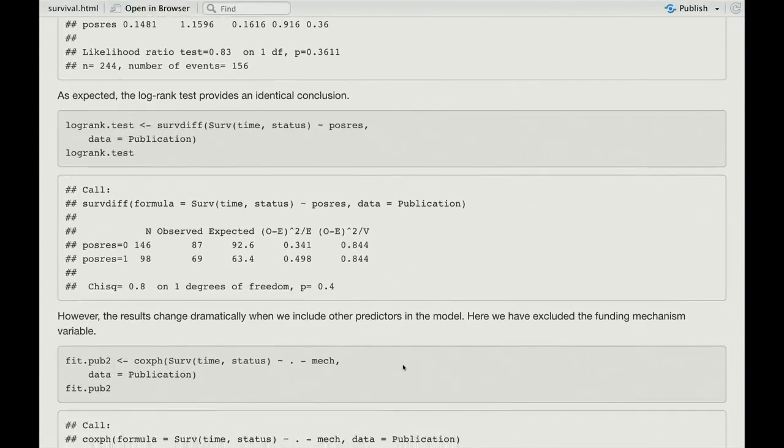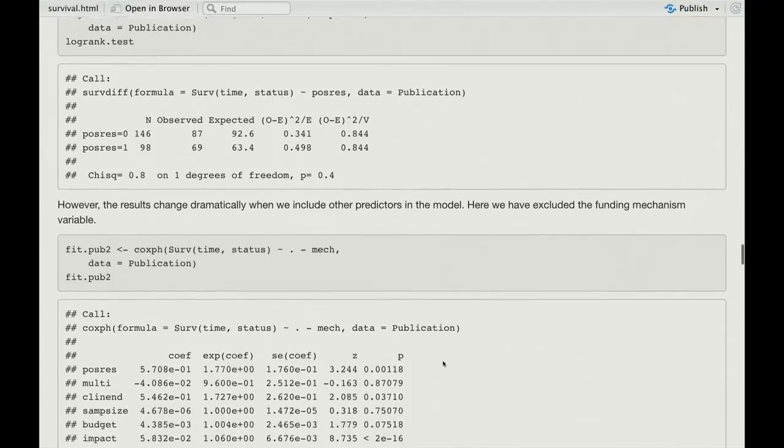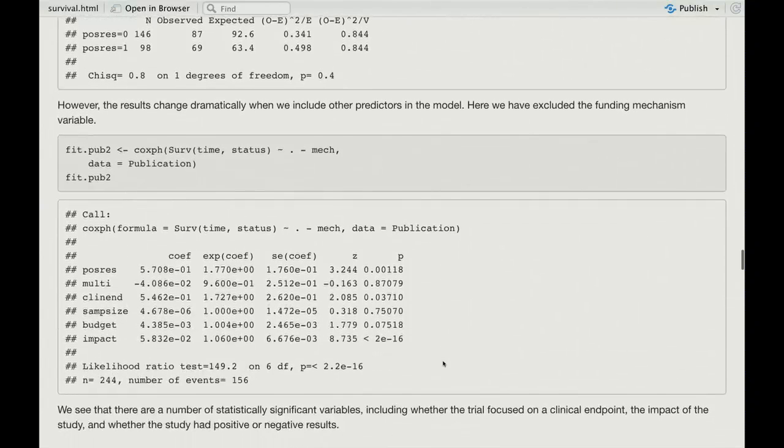And once again, if we put in other predictors in the model, we're going to put all the other predictors in the model except the funding mechanism variable. Why was that left out, Rob? I don't remember. Sorry I asked. In the actual lab in the book, I believe it's done both ways.